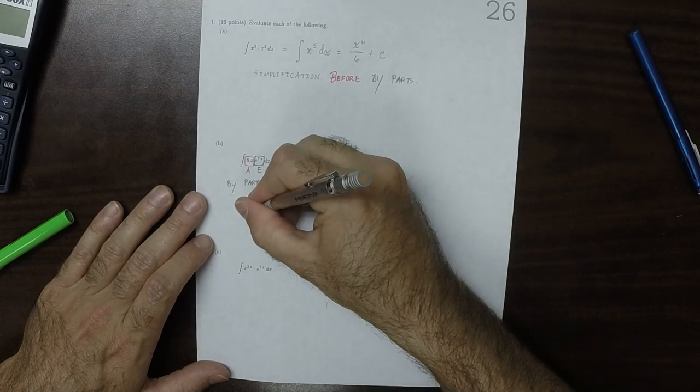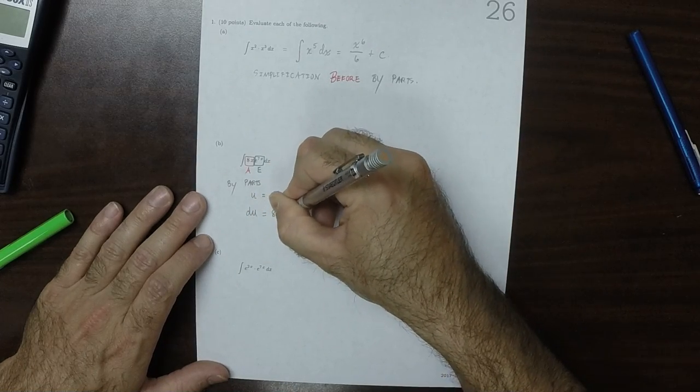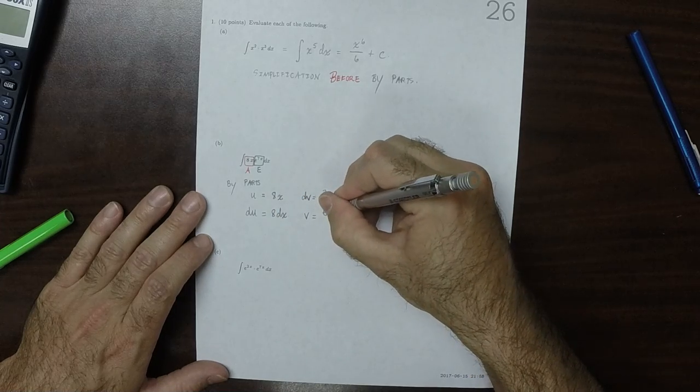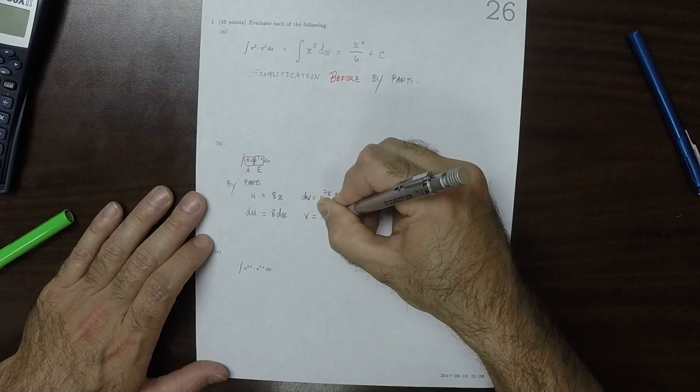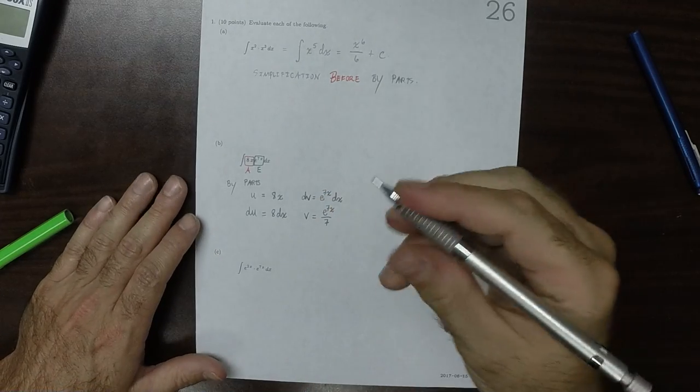So then du is 8 dx, and v is the antiderivative of that, so e to 7x over 7. And I'm not going to write plus c, because I won't be finished yet.